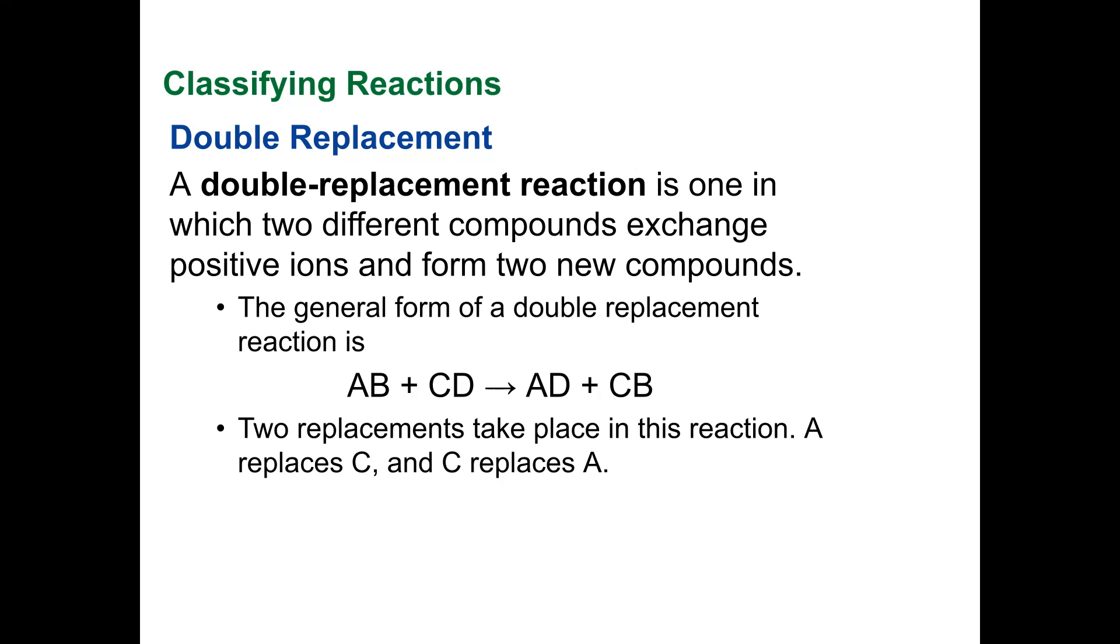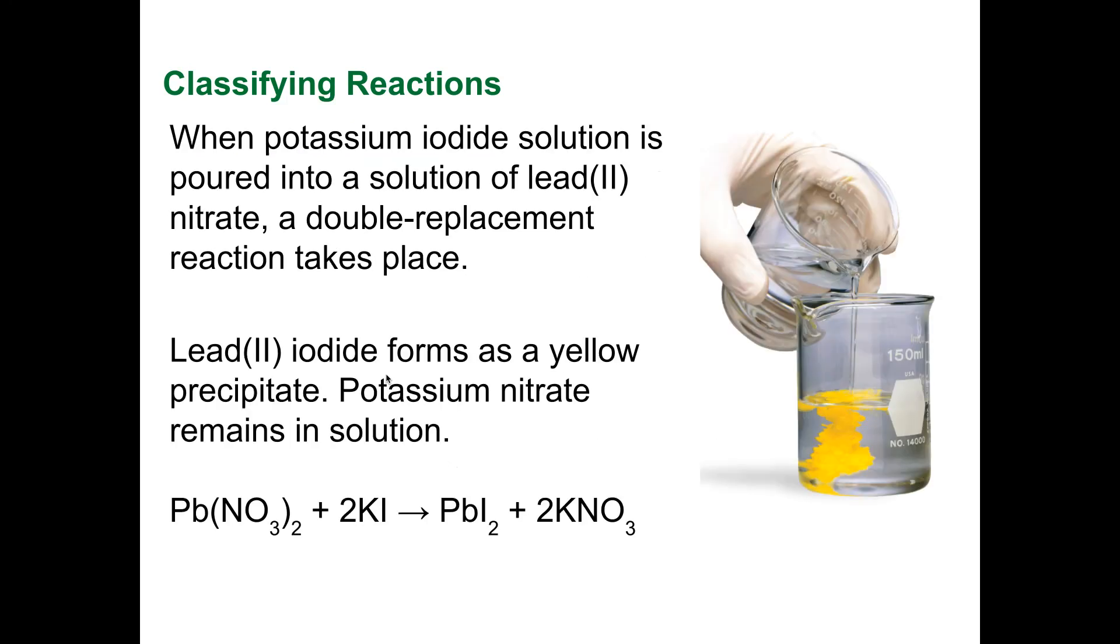A double replacement reaction is one in which two different compounds exchange positive ions to form two new compounds. The formula is AB plus CD equals AD plus CB. Two replacements take place in this reaction: A replaces C and C replaces A. There's two replacements is the best way to do it.